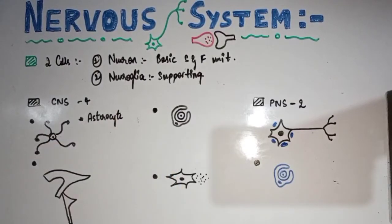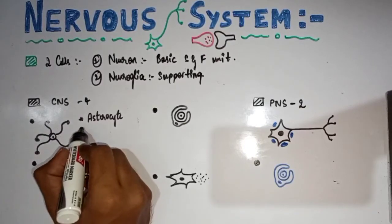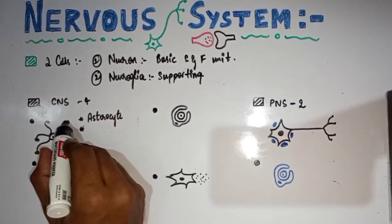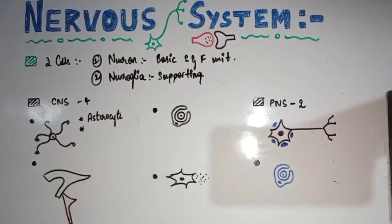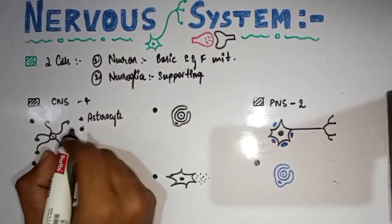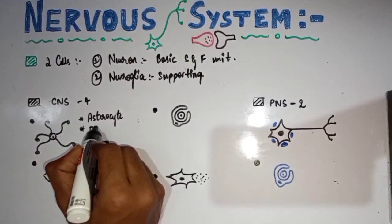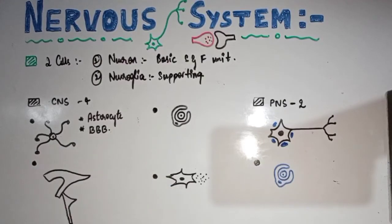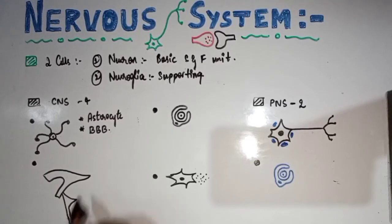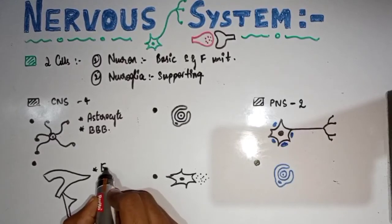The first type of CNS neuroglia is astrocytes — star-shaped cells with food processes connected to capillaries. They are responsible for maintenance of the blood-brain barrier, preventing toxic material from entering the CNS via the capillaries. The second type is ependymal cells.